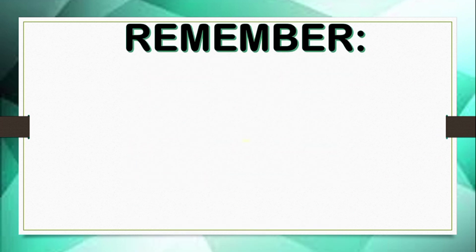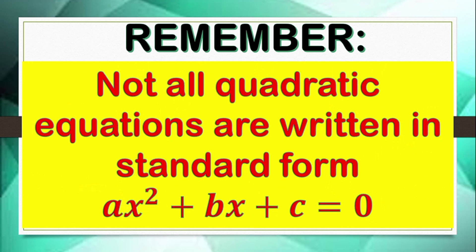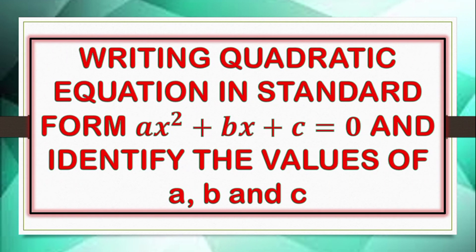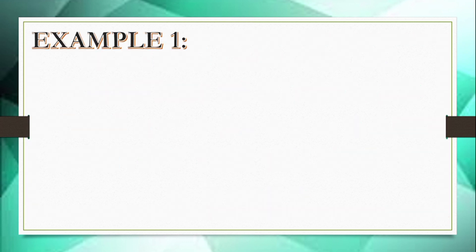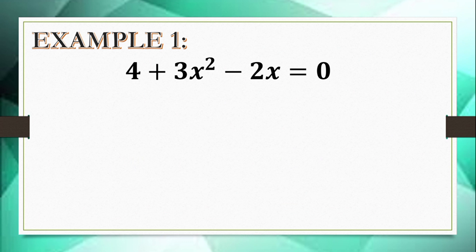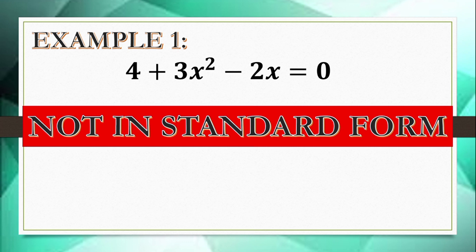Let's remember this: not all quadratic equations are written in standard form ax² plus bx plus c equals 0. So our task is to write quadratic equations in standard form and identify the values of a, b, and c. Let's have example number 1: 4 plus 3x² minus 2x equals 0. In this form, it is not written in descending order where the term with the highest degree comes first. Therefore, this equation is not written in standard form.